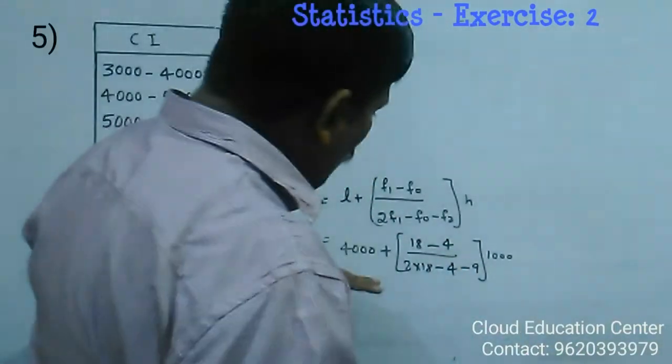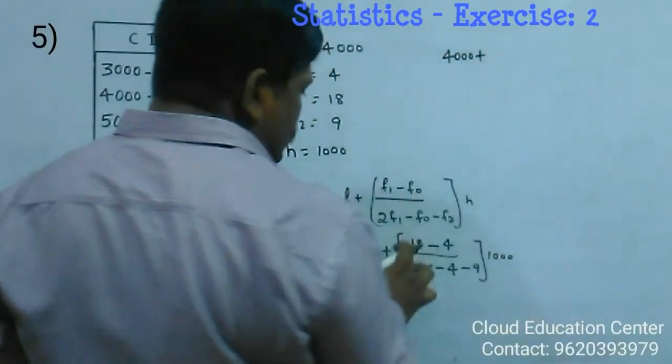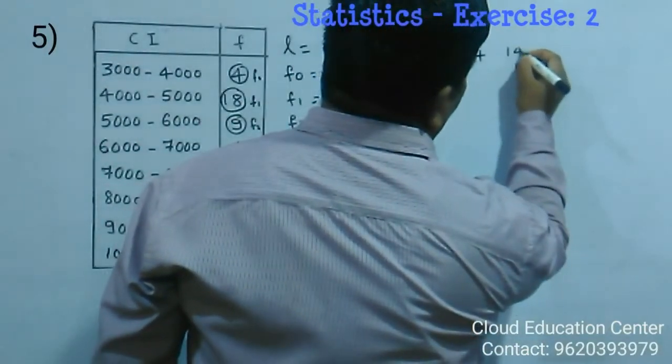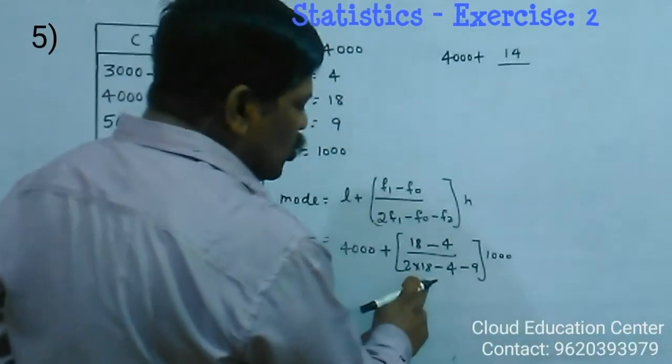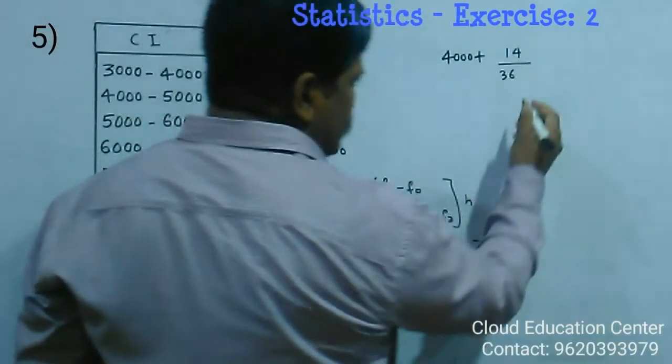Now this is 4000 plus 18 minus 4 is 14, divided by 2 into 18 is 36 minus 4 minus 9.